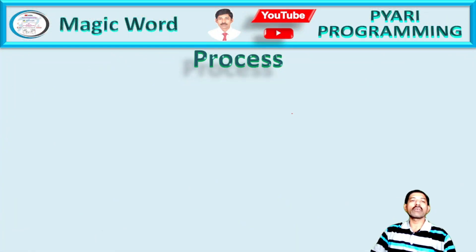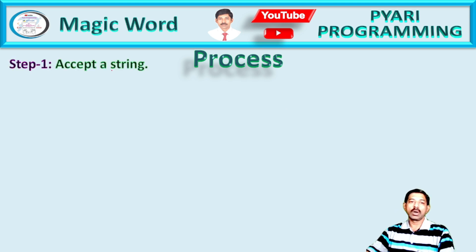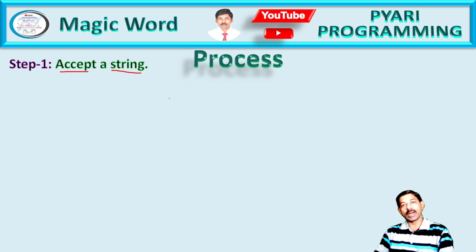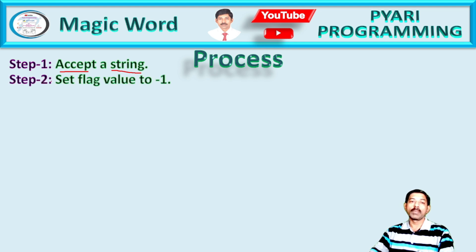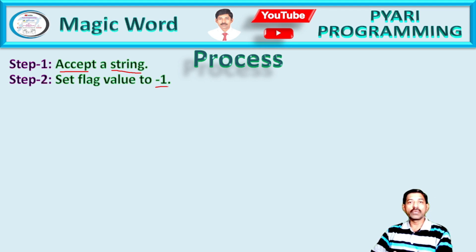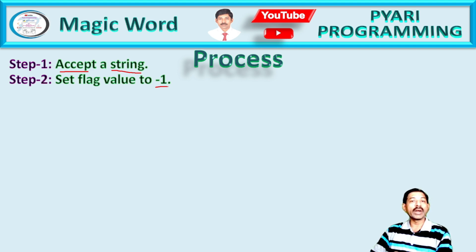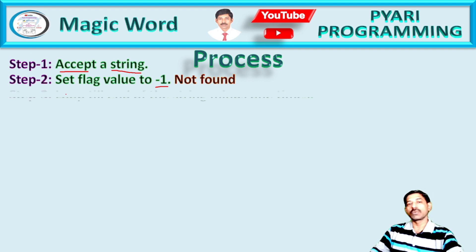Now let's see how we can write the program. Before writing the program, as I said, we need to know the steps. The first step is to accept a word — if we don't accept a word, we cannot find out the characters, and if we cannot find out the characters, we cannot find the consecutive characters. So the accept process has to be done first. After that, I will set the flag value to minus one. Why? Because if there is more than one reason for coming out of the loop, I set the flag to minus one. Initially, minus one means it is not a magic word.